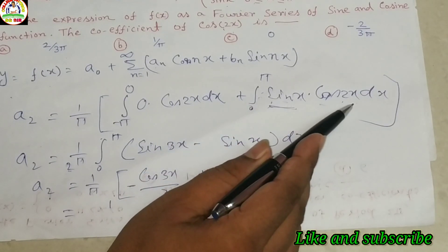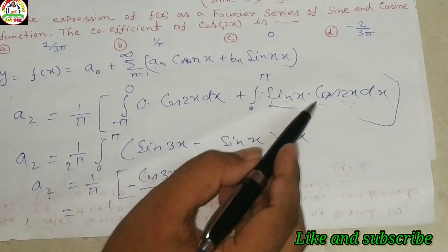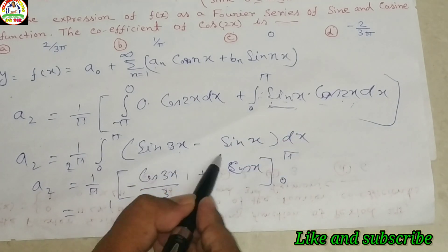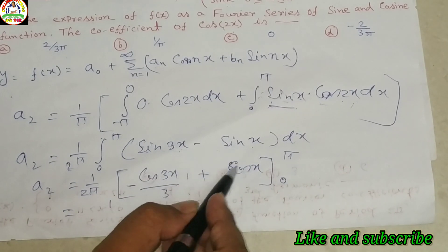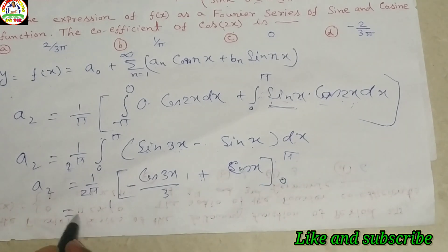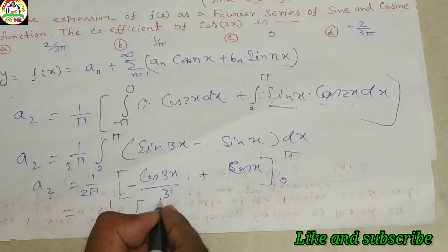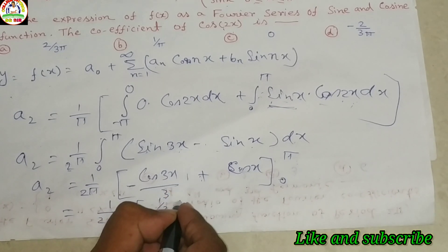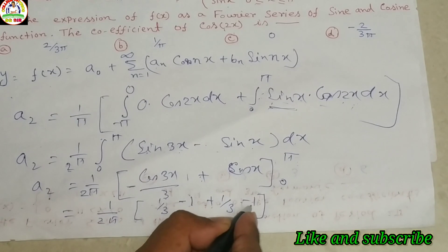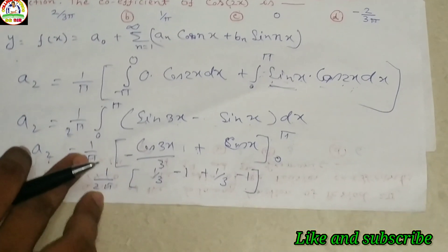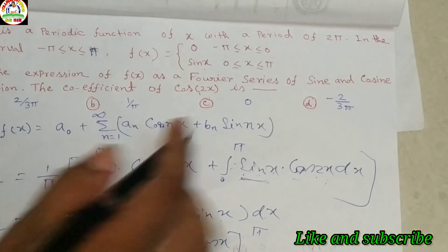Using 2 sin(C)cos(D) = sin(C+D) − sin(D−C), we get sin(3x) − sin(x). Integrating: (1/2π) [−cos(3x)/3 + cos(x)] from 0 to π. Substituting the limits: cos(3π) = −1 and cos(π) = −1. We get (1/2π)[1/3 − 1 + (−1/3 + 1)] = −2/(3π). So option d, −2/(3π), is correct.